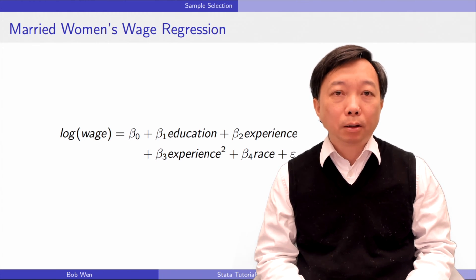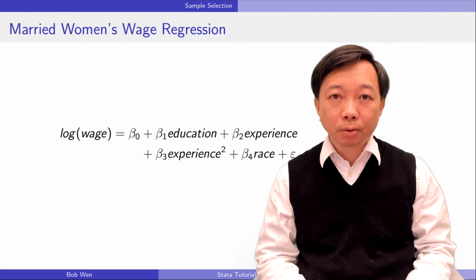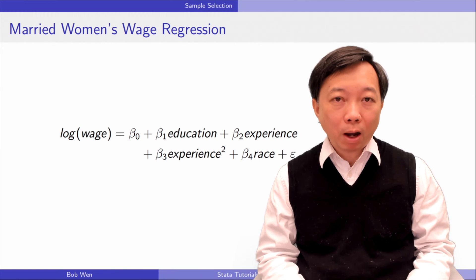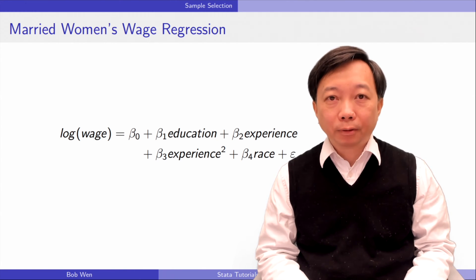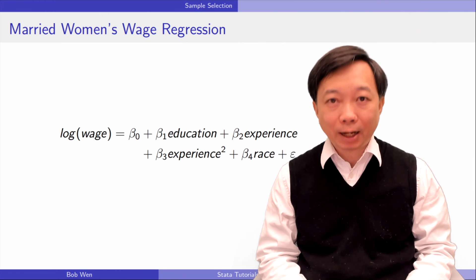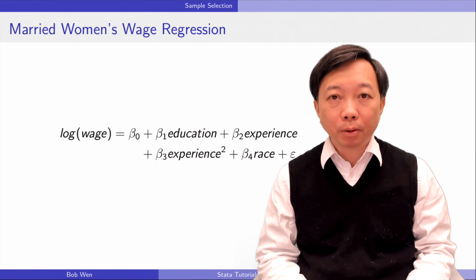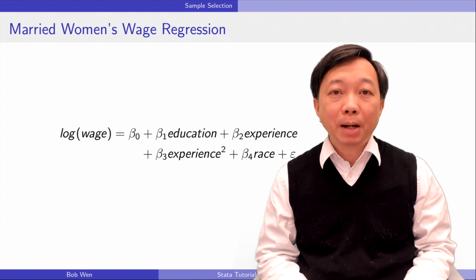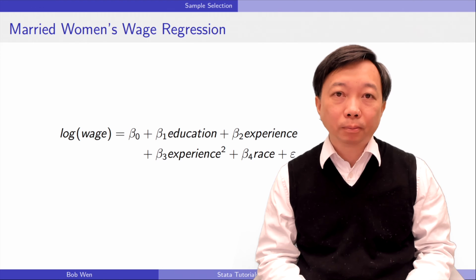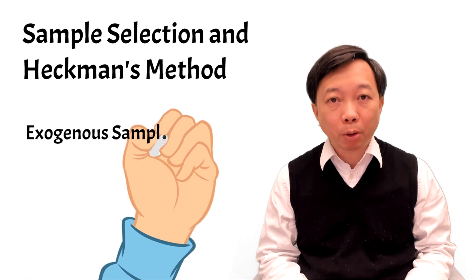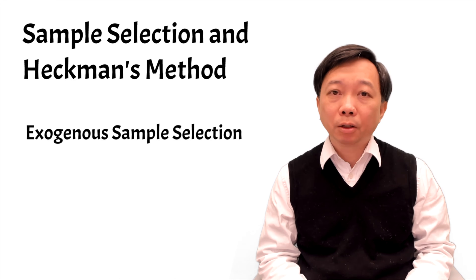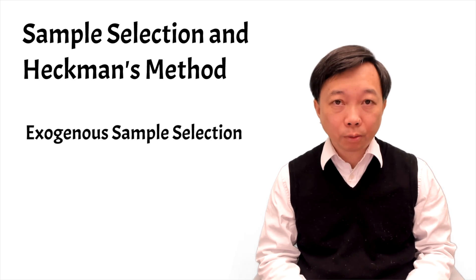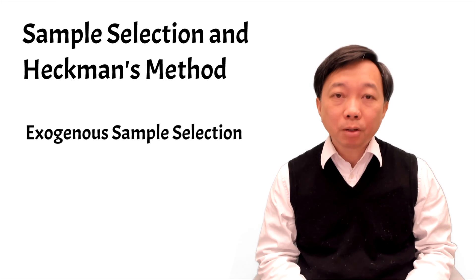However, not all selected samples lead to biased OLS estimates. There are exogenous and endogenous sample selections. If the sample is chosen on the basis of exogenous explanatory variables in the model, it belongs to exogenous sample selection, and it will not cause biased estimates because we control for the selection variables in the model.